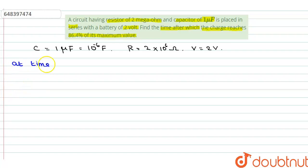at time t, q is equal to 86.4% of its maximum value q0. Therefore, q by q0 is equal to 86.4 divided by 100.